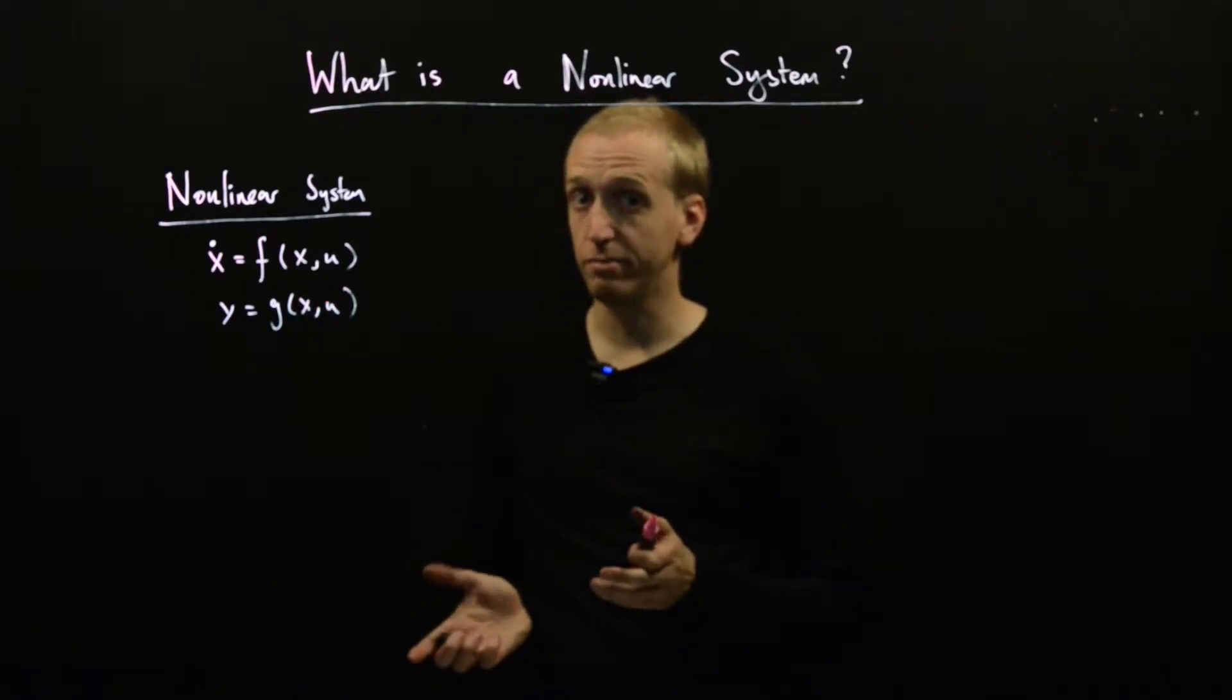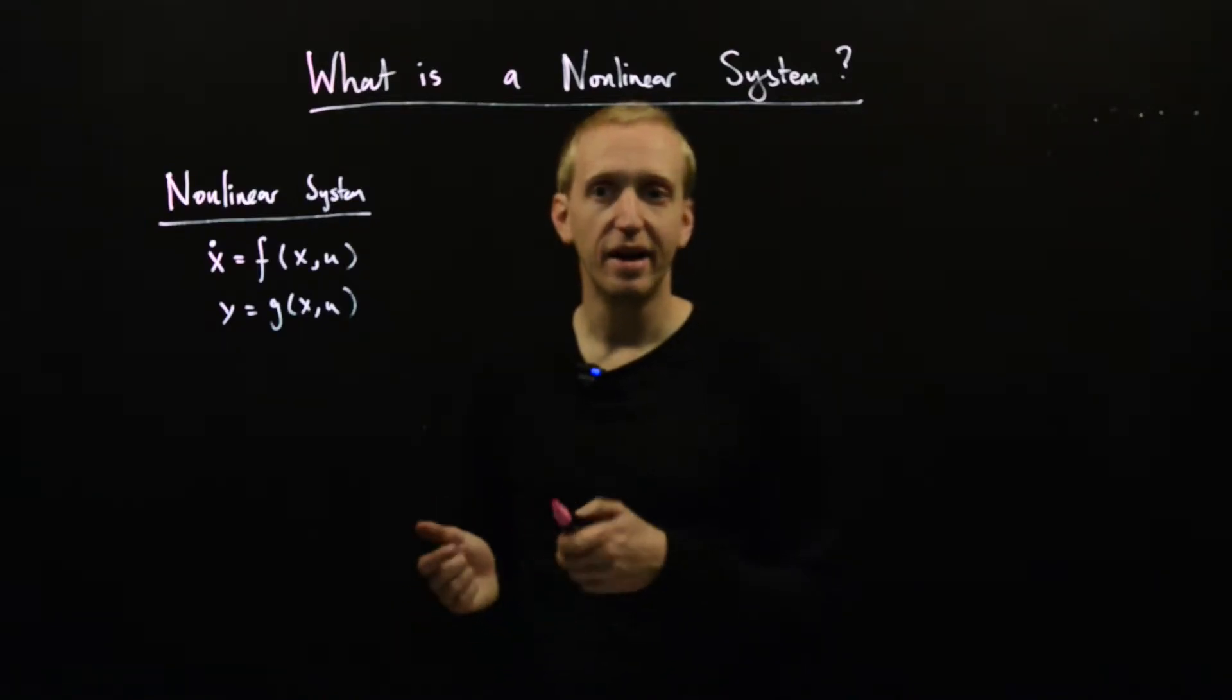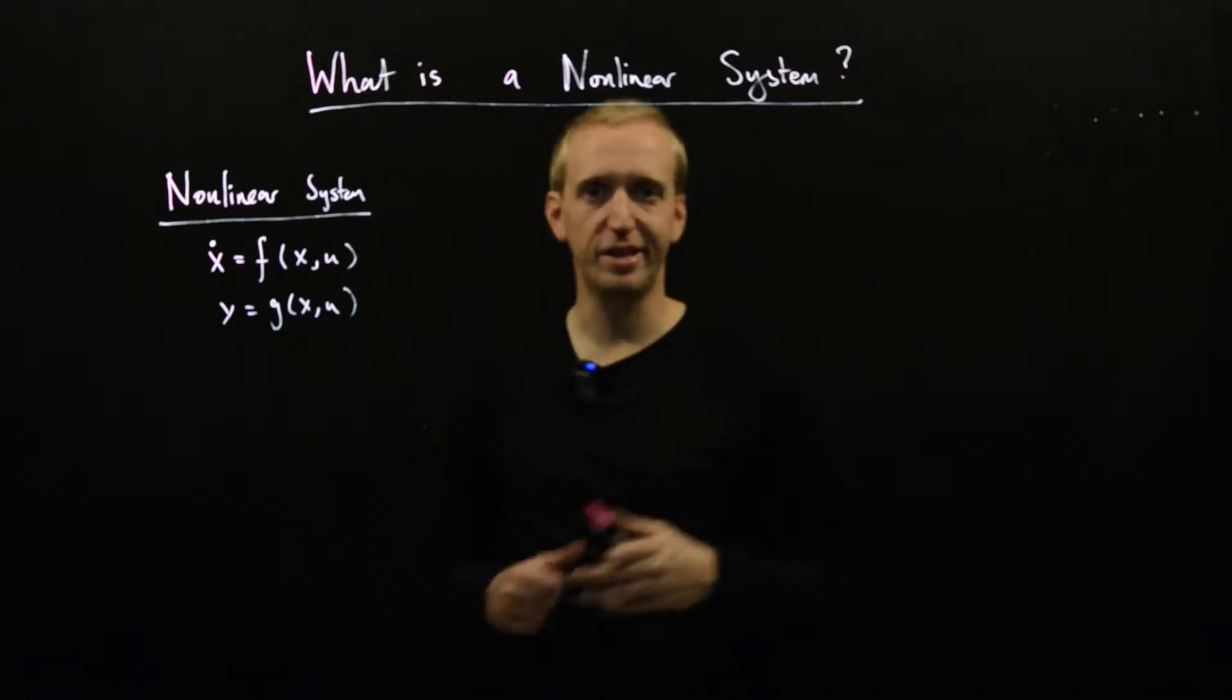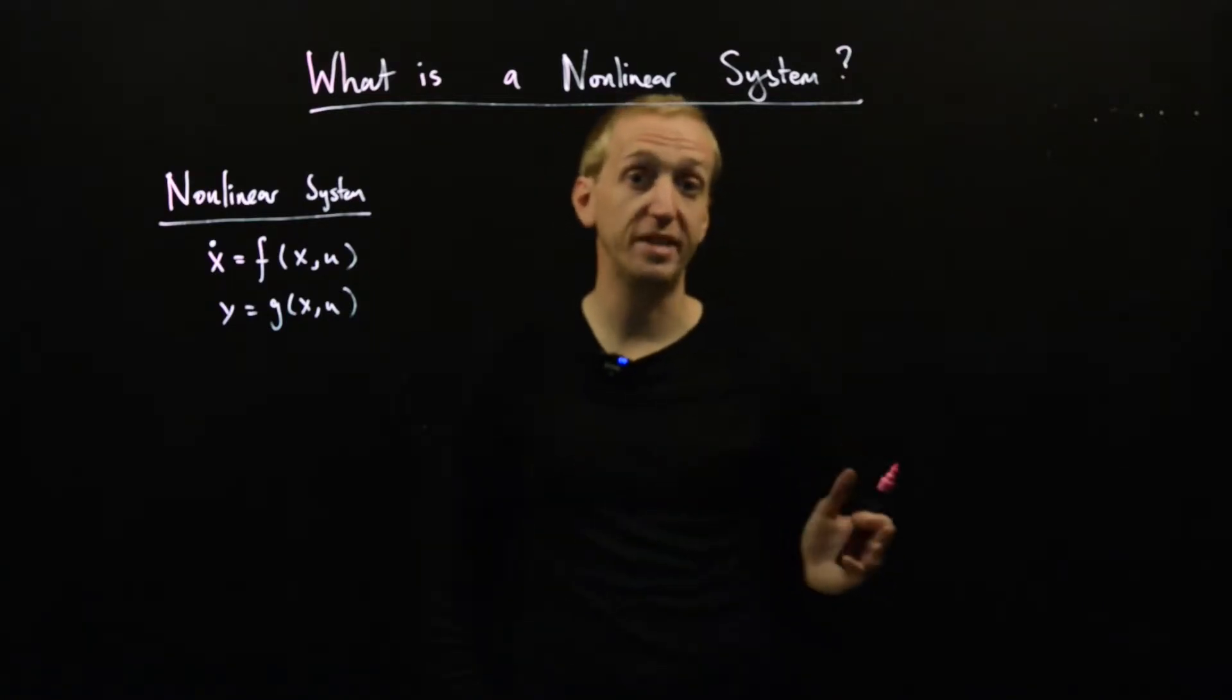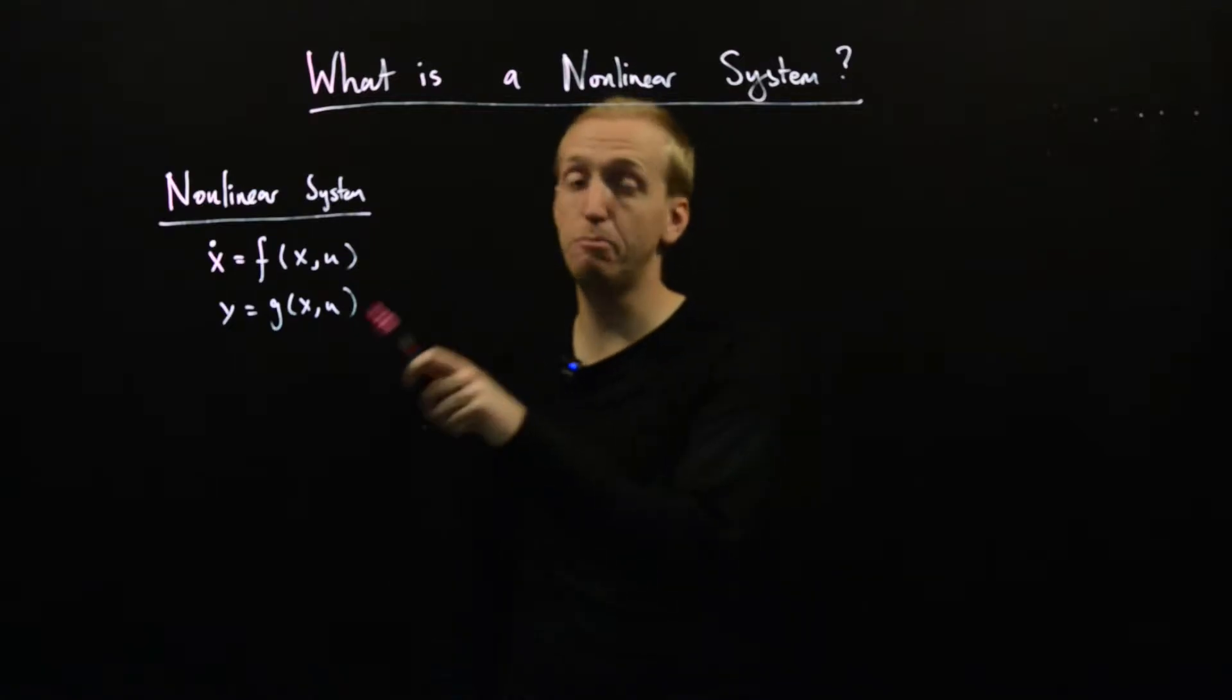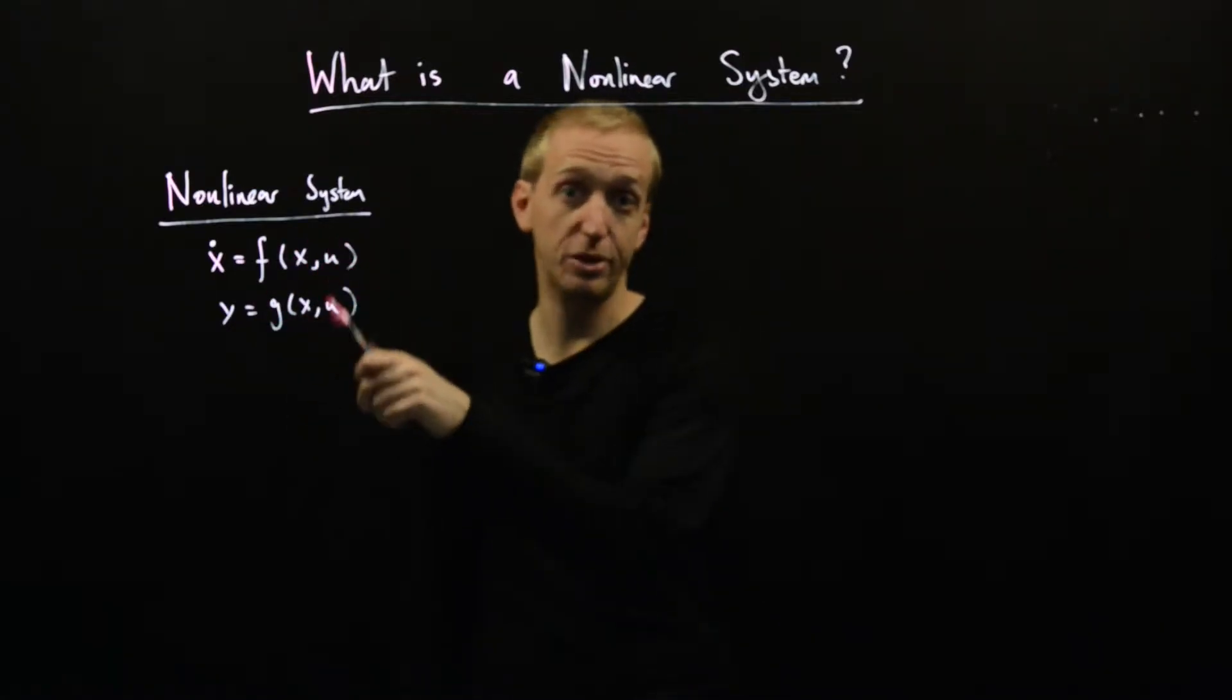We already saw some examples of nonlinear systems introducing nonlinear behaviors, and those equations were not written in this form. So we've got a little bit of work to do to connect what we saw at the beginning with what we see here. But it turns out that all of those nonlinear systems can be put into this general form, and this is in fact a really pretty general class.